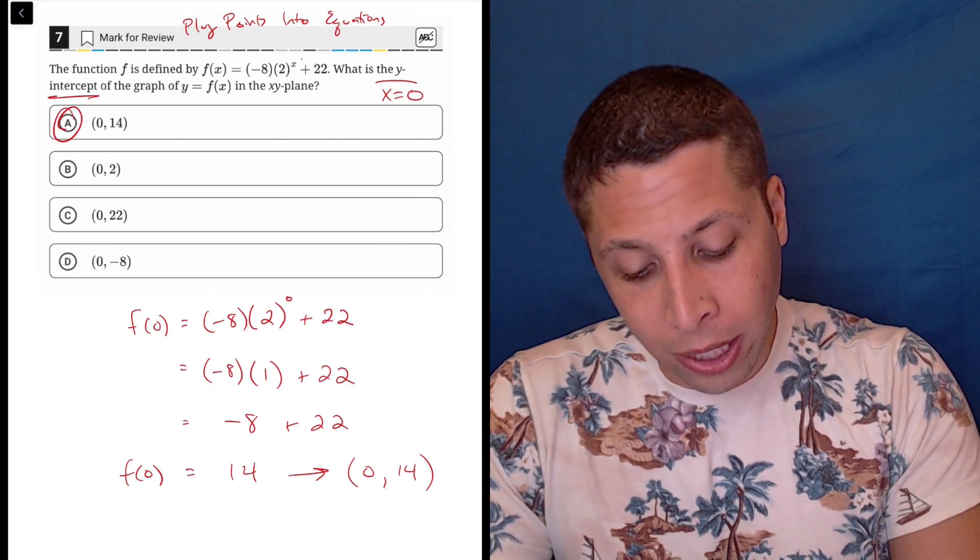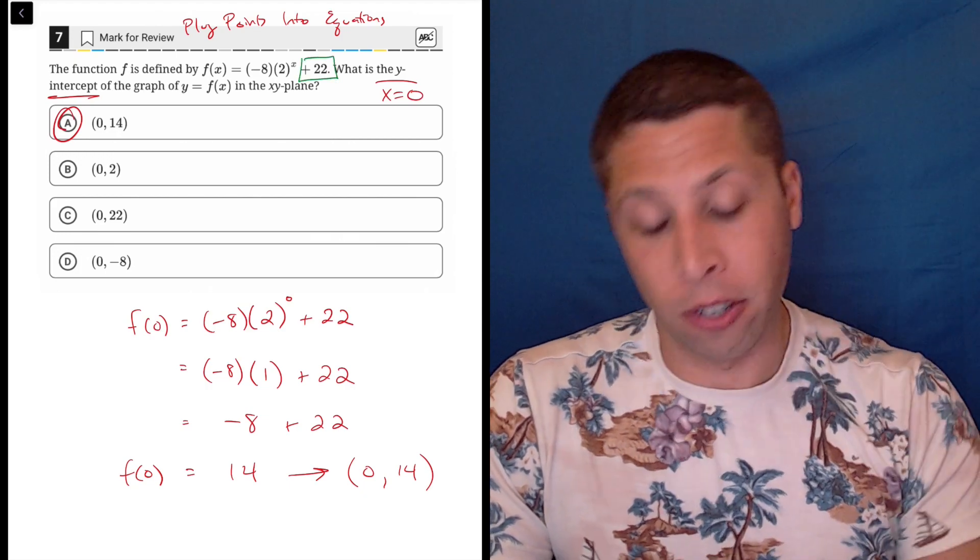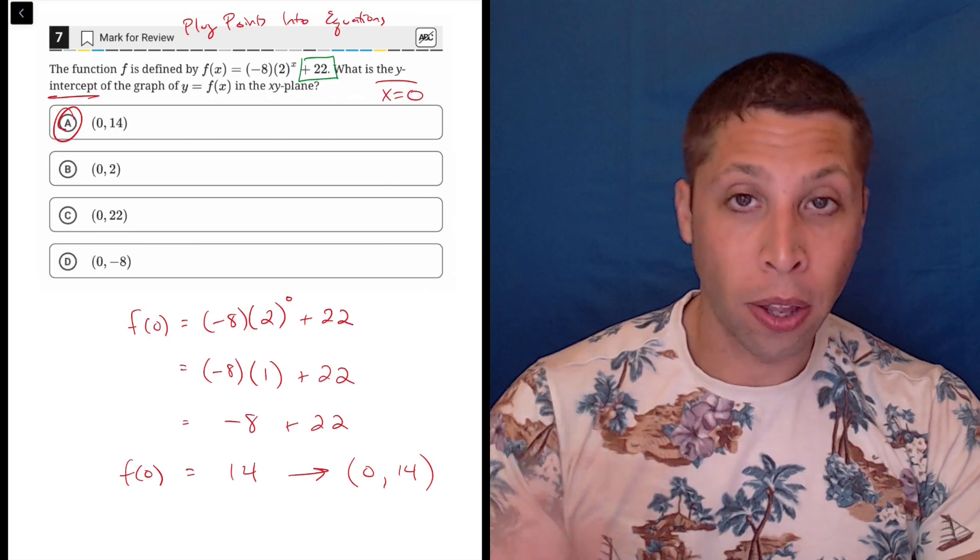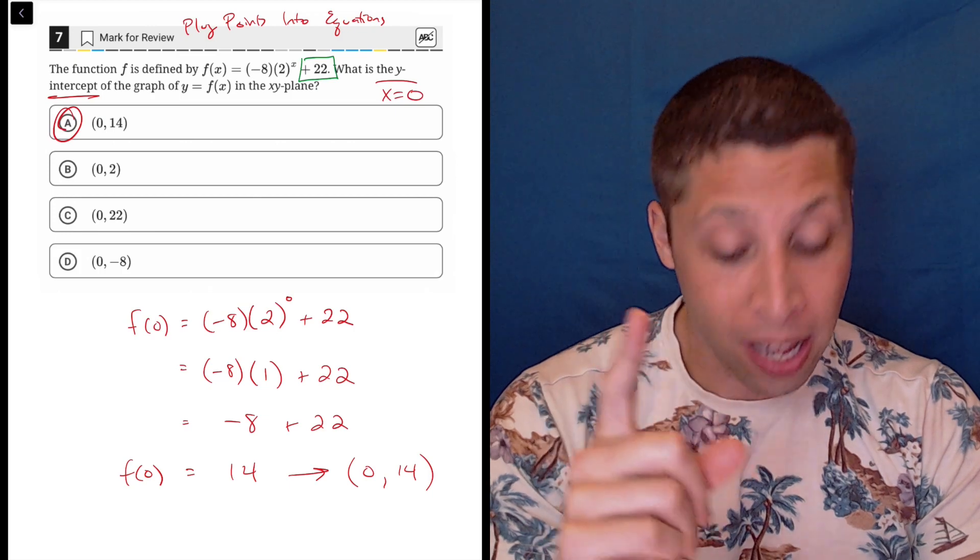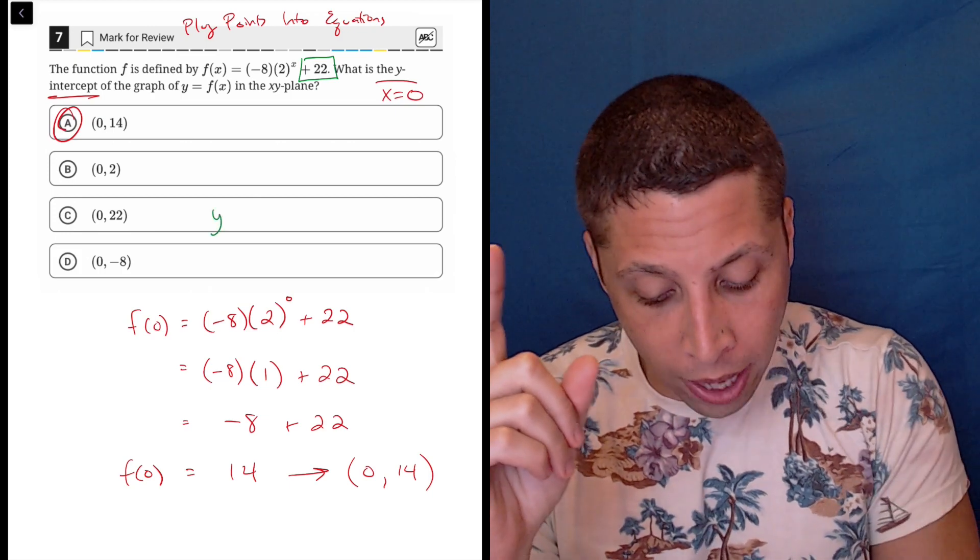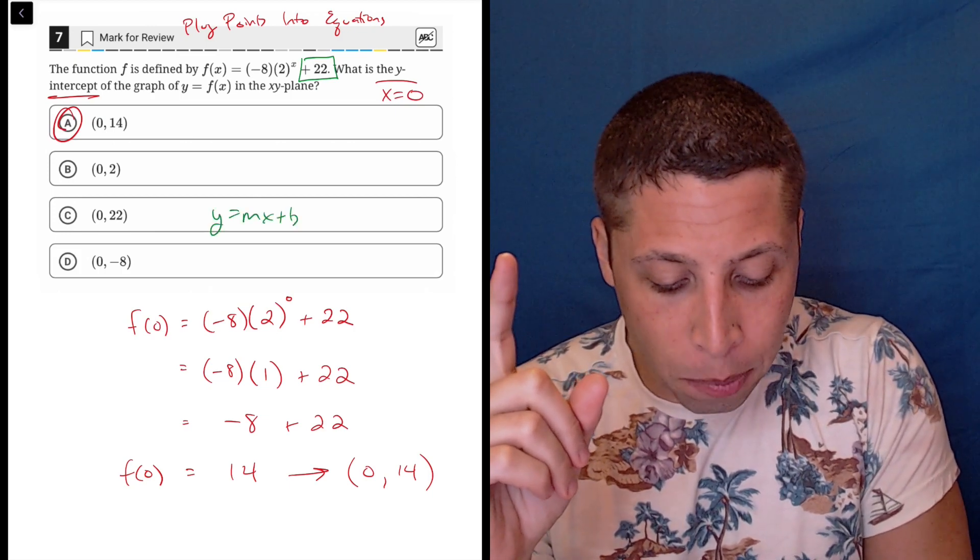Either you are going to look at the end portion here, this plus 22, and you're going to think, 'Oh yeah, y-intercepts - those are the thing that gets added on, right?' We know that in lines, right? If we have Y equals MX plus B, or if we have a normal quadratic equation, we know that the C is the y-intercept here, the B would be. So this is a rule.